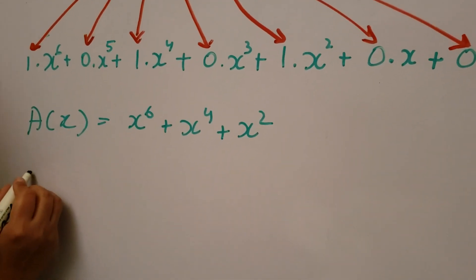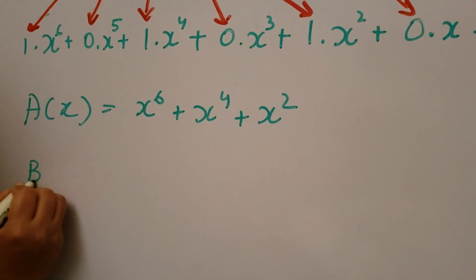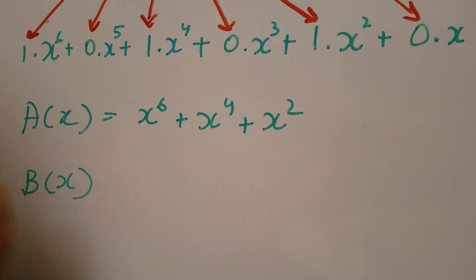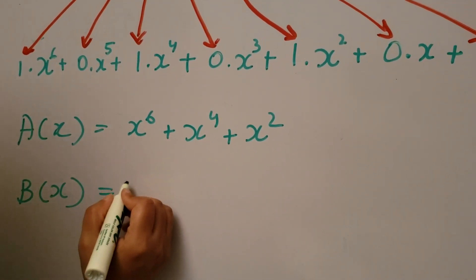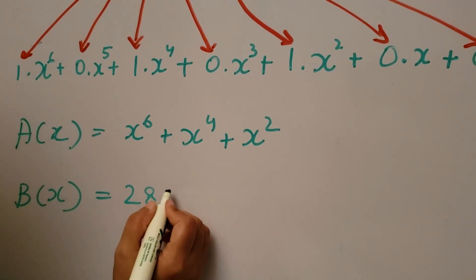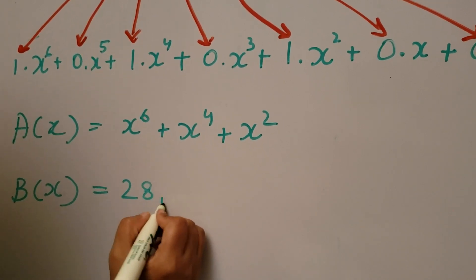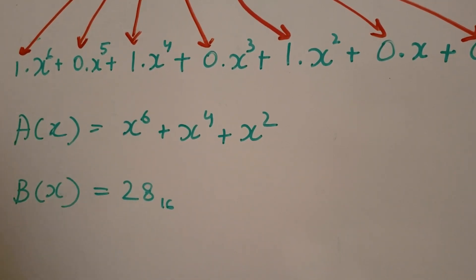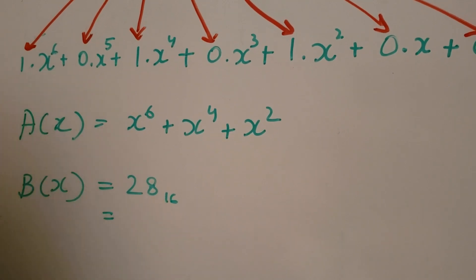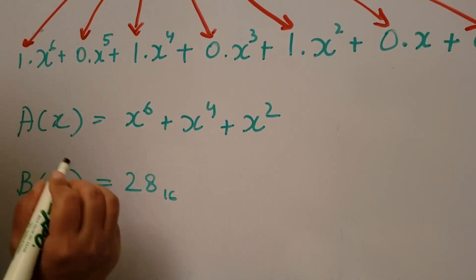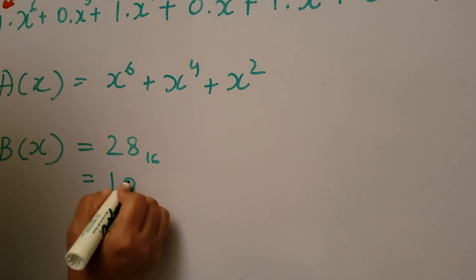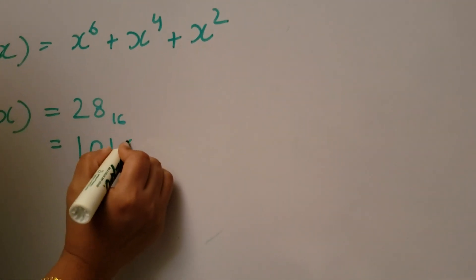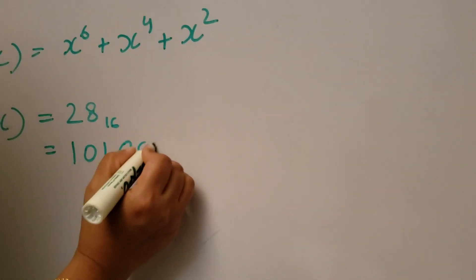Now let's calculate B(x) in the same way. B(x) is 28 in hexadecimal, which in binary is: 1, 0, 1, 0, 0, 0.